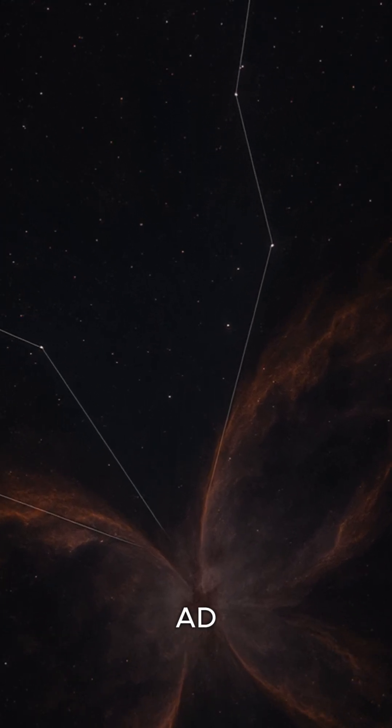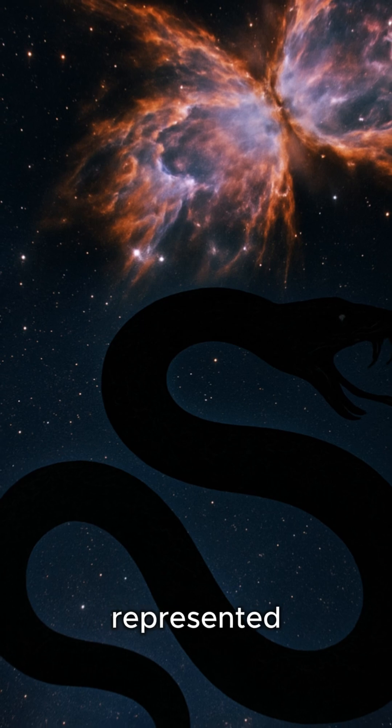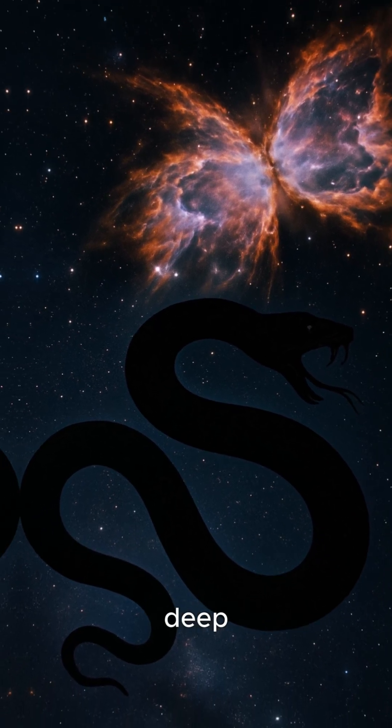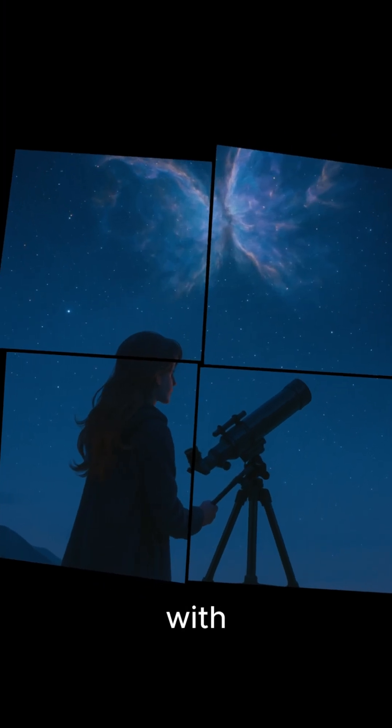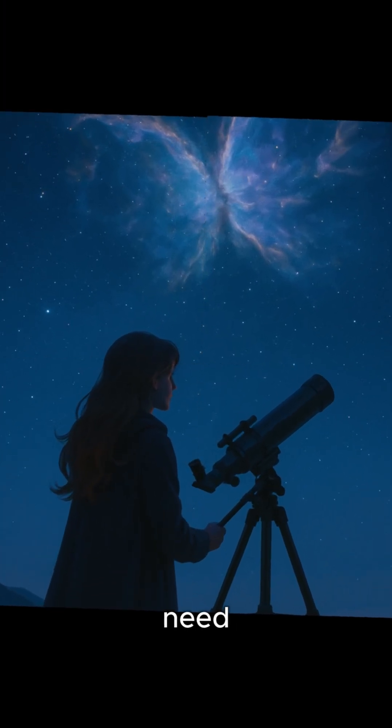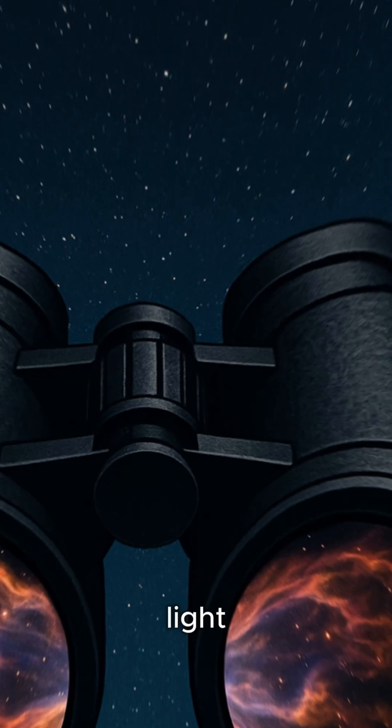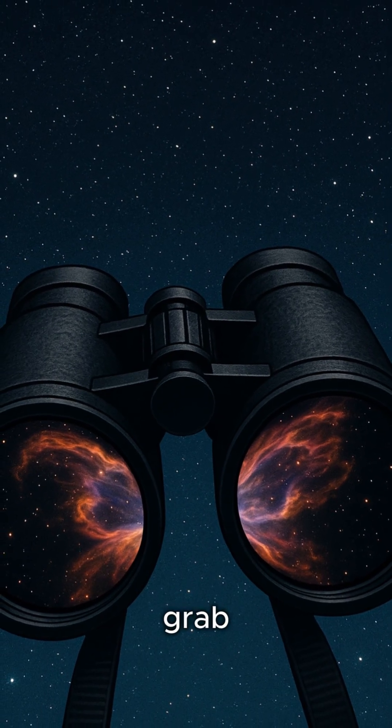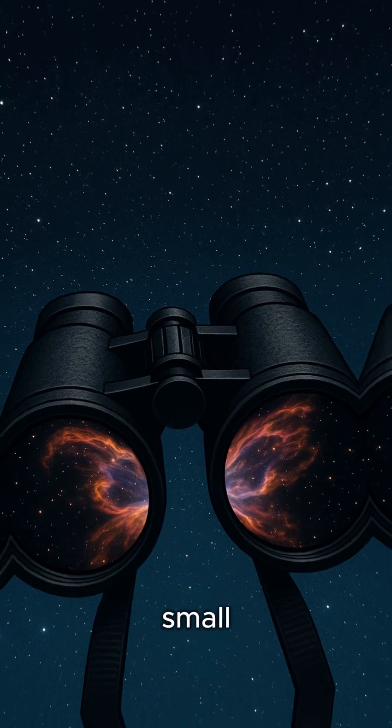This constellation is represented by a snake, and the Butterfly Nebula is one of its brightest deep sky objects. It's pretty easy to spot with the naked eye, but you need dark skies to see it. If light pollution is bad where you live, you might want to grab a pair of binoculars or a small telescope.